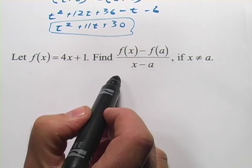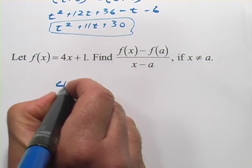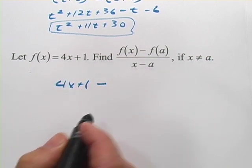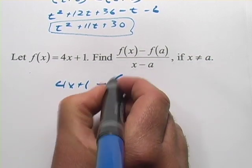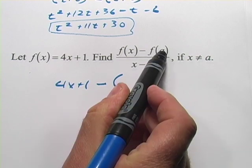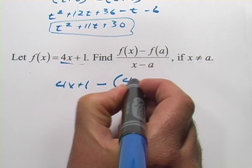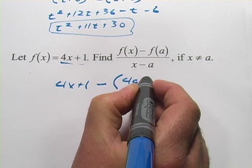So, let's just start plugging this in. On the top here, we have f of x first. Well, f of x is just 4x plus 1. So, that's done. Then, we have minus f of a. Well, and I'm going to put that in parentheses. f of a will be this function where a subs in for x. So, that would be 4a plus 1.